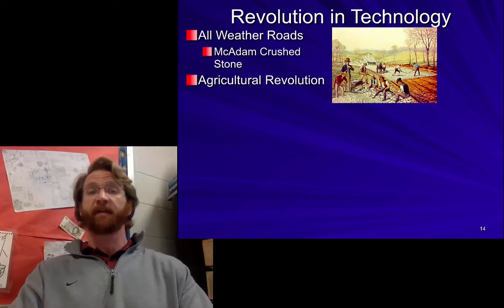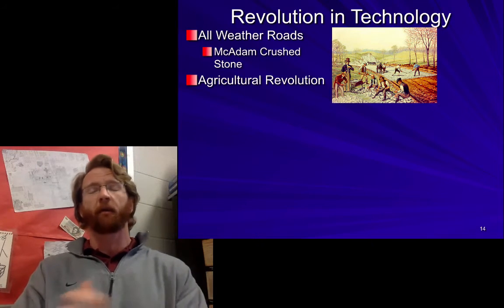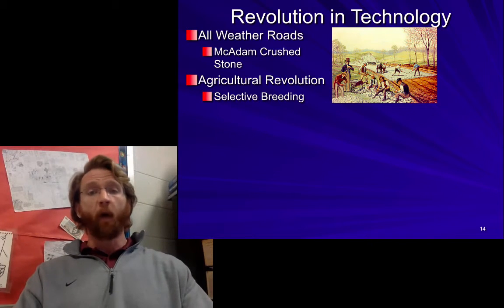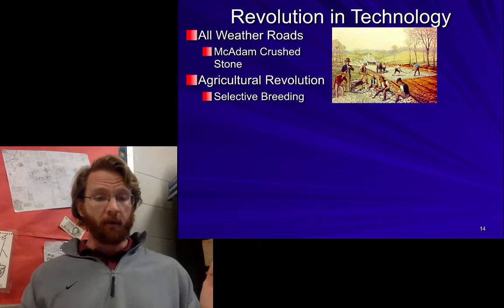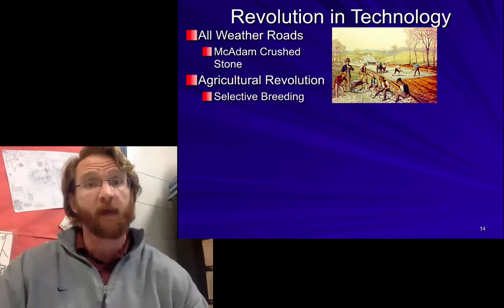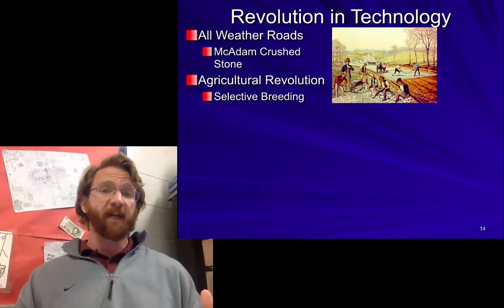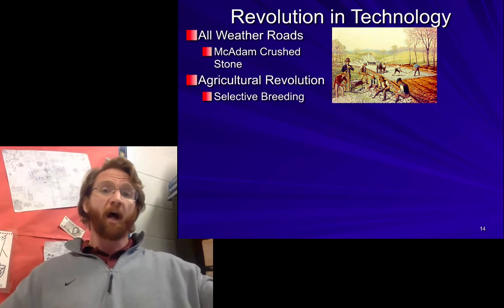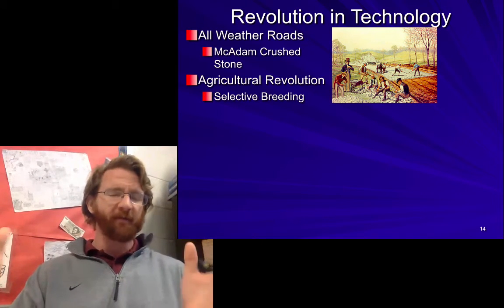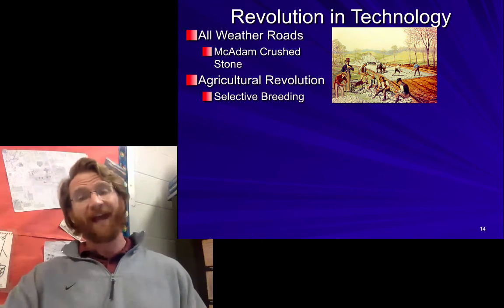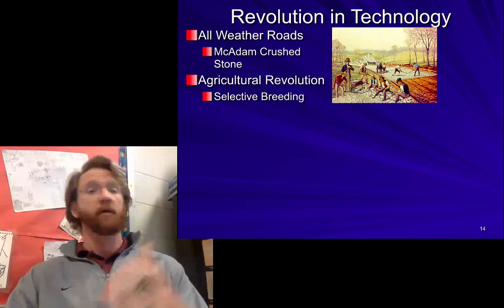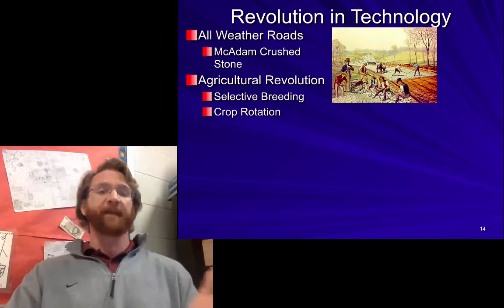The agricultural revolution took place during the era of revolution and had a tremendous impact on food production. First, selective breeding: farmers in the Netherlands began to selectively breed not only their crops but also their animals to get specific characteristics — bigger cows for more meat, shorter cows for hillside living. They created the type or breed of animal they wanted, whether cow, horse, dog, or sheep.